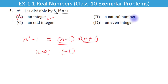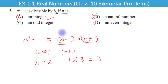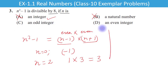Testing natural numbers: yadi n equal to 2 rakhen to (2 minus 1) = 1 aur (2 plus 1) = 3, product = 3, jo 8 se divisible nahi hai — yeh answer bhi galat. Yadi n odd hai to n minus 1 even ho jayega aur n plus 1 bhi even ho jayega. Yeh possibility hai ki yeh answer ho sakta hai. Option D bhi check karte hain jab n even ho.